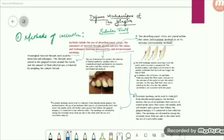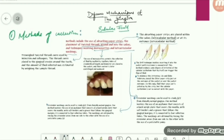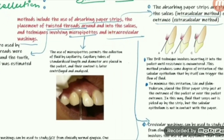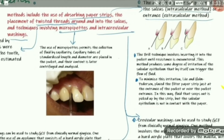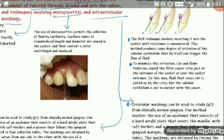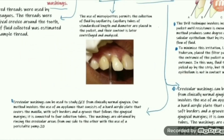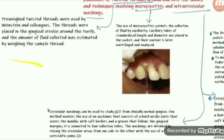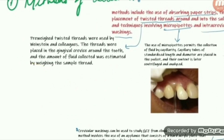To minimize this, what Lowe and Holm-Pedersen did was they placed the strip just at the entrance of the pocket. In this way, the fluid will also seep out and the paper will not come in contact with the epithelium. This is the extrasulcular method.